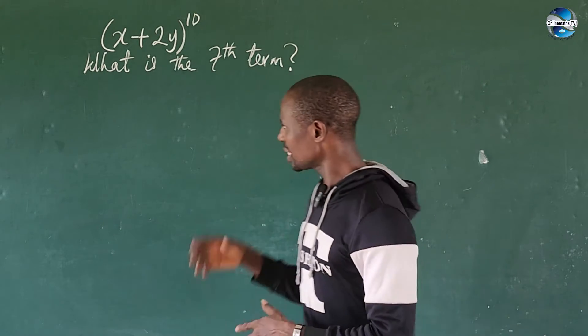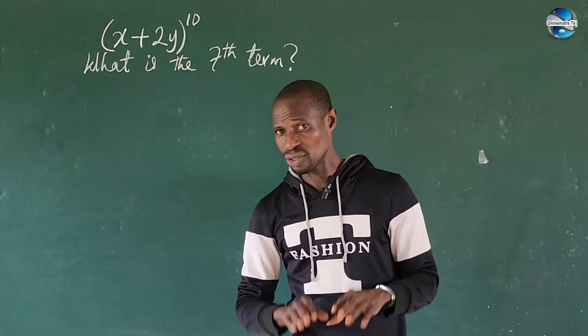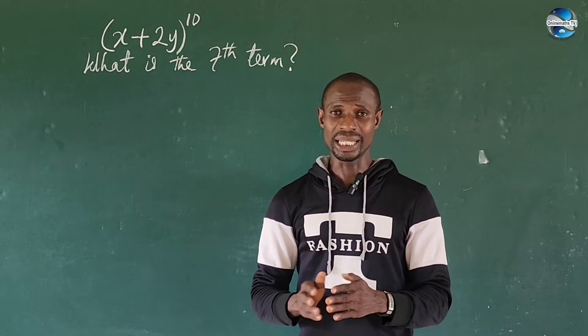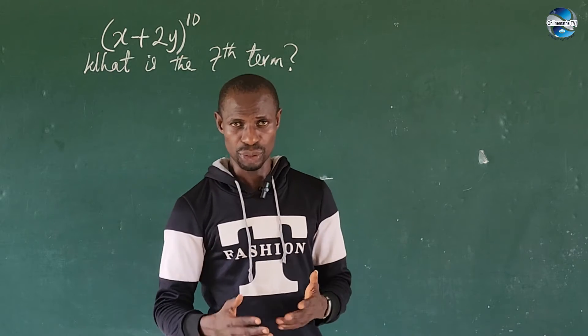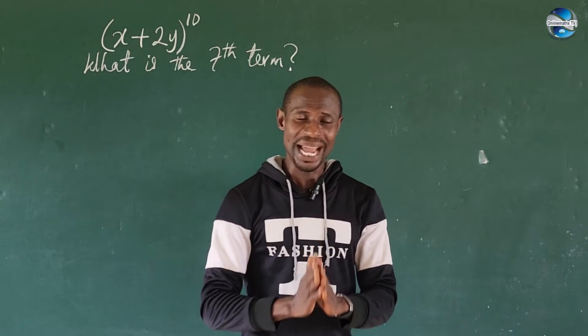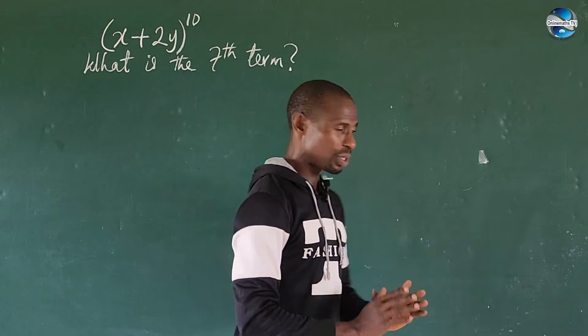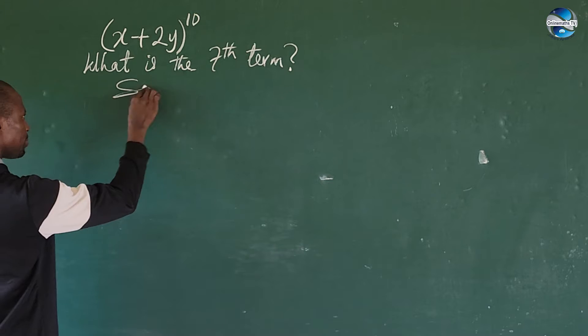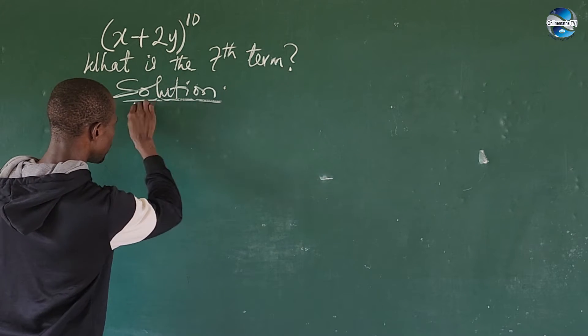Now I solved a question of this kind where the power was raised to 12, and I used the Pascal diagram, the Pascal triangle, to get the coefficient. But I'm not going to use the Pascal triangle to do that. I'm going to use the binomial theorem. Okay, so follow me on this journey. Alright, so we take our solution.